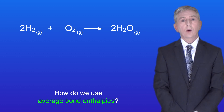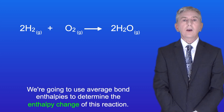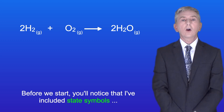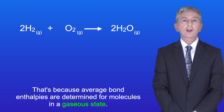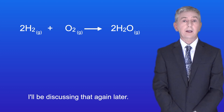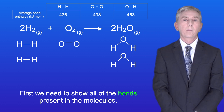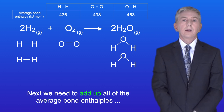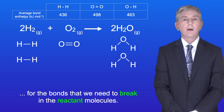So how do we use average bond enthalpies? Let's go back to our first reaction and use average bond enthalpies to determine the enthalpy change. You'll notice that I've included state symbols and I'm showing water as a gas, because average bond enthalpies are determined from molecules in a gaseous state. First we need to show all of the bonds present in the molecules, and I'm also showing you the average bond enthalpies of the bonds involved. Next we need to add up all of the average bond enthalpies for the bonds that we need to break in the reactant molecules.